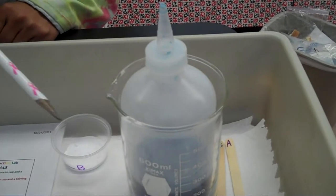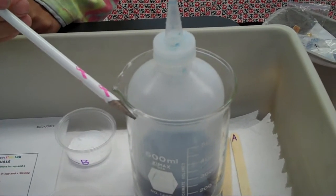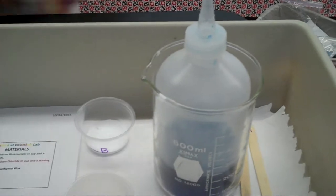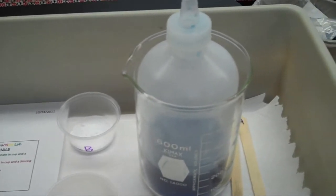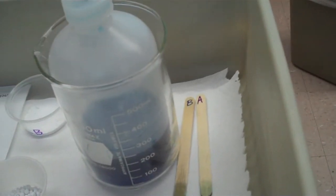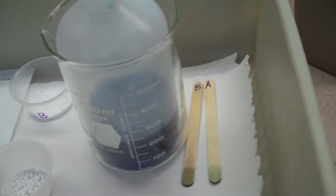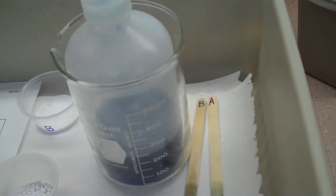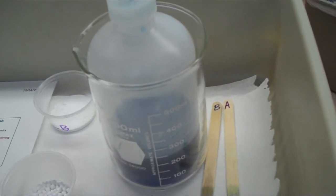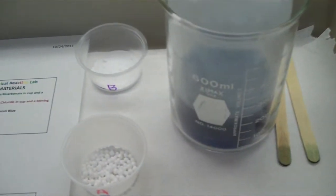In the beaker and inside the squirt bottle, we have our bromothymol blue. And shortly, we will get started here. Don't forget our stirring sticks right here, labeled A and B. Only use those for those correct specimen cups with A and B.